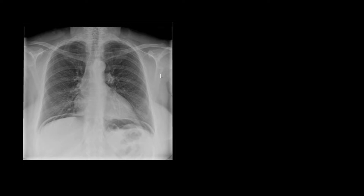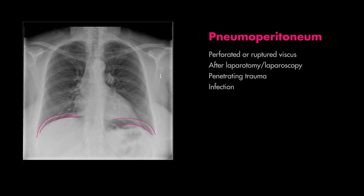Keep in mind that air immediately underneath the diaphragms on a chest x-ray is not normal. This is suggestive of a pneumoperitoneum, usually from a perforated viscus, as in the case of a perforated peptic ulcer. In this case, a surgical consultation is required as this patient may need to go to the operating room.